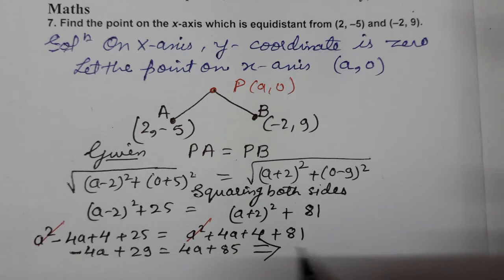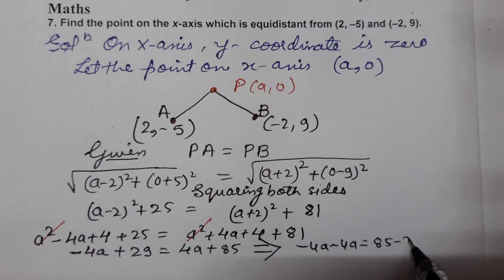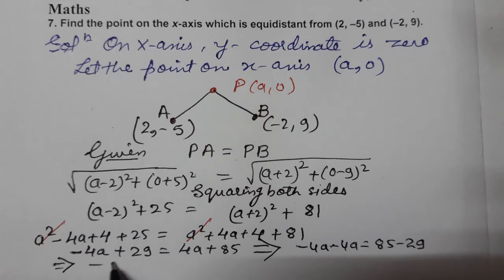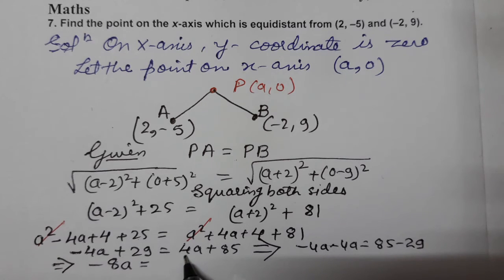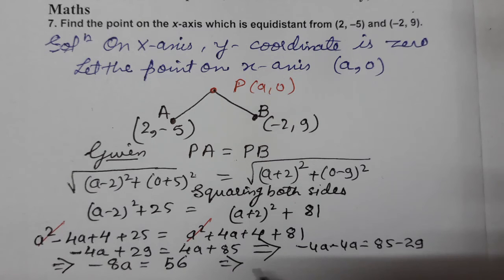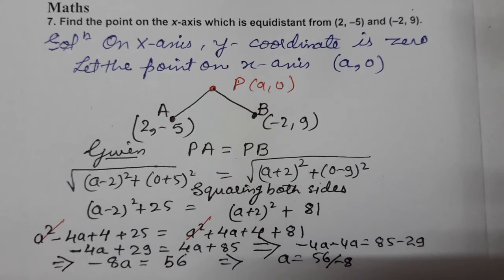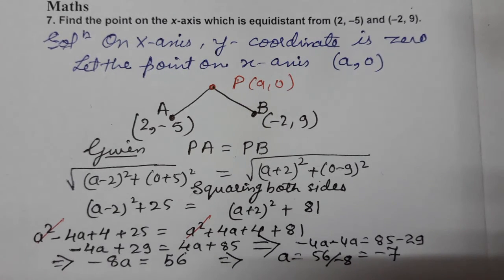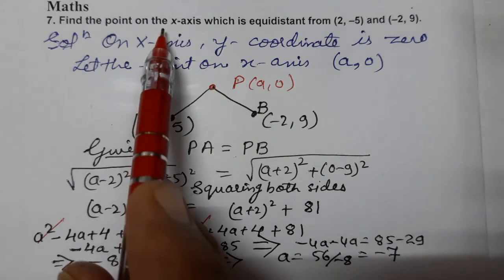Bringing variables to one side: −4a − 4a = 85 − 29, which gives −8a = 56. Therefore a = 56 ÷ (−8) = −7. So the value of 'a' is −7.